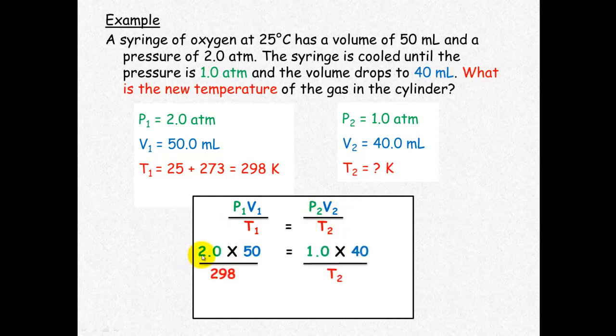We plug in the information that we know. So P1 is 2.0, V1 is 50 ml. Remember, as long as the units are the same on both sides, it doesn't matter what units pressure or volume are in, as long as temperature is always in Kelvin. So pressure 2 is 1, volume 2 is 40, and we're trying to find T2. We manipulate this equation around and we will work out that T2 equals 120 Kelvin.